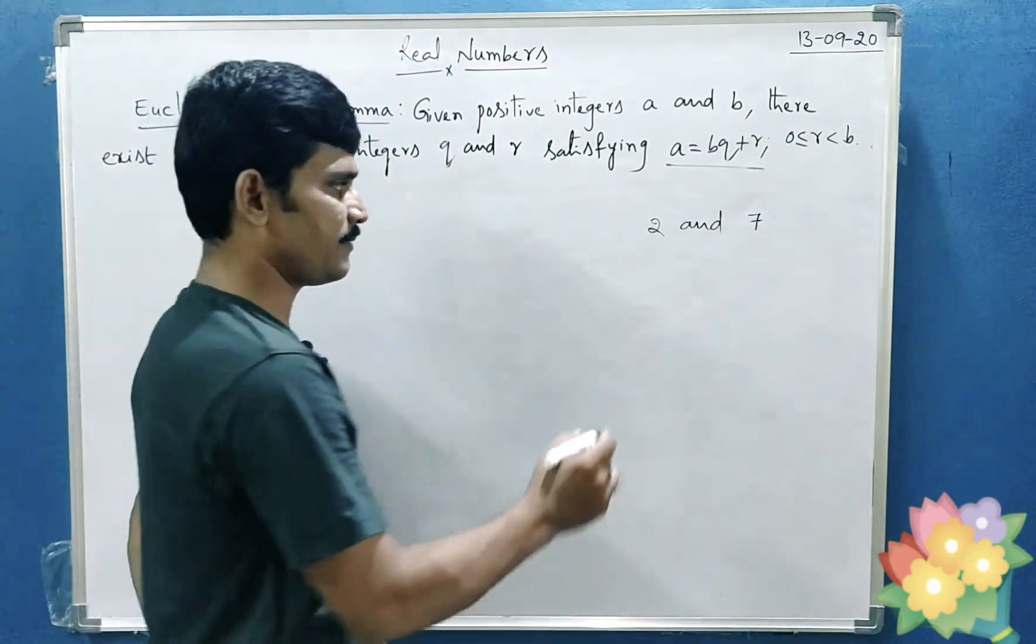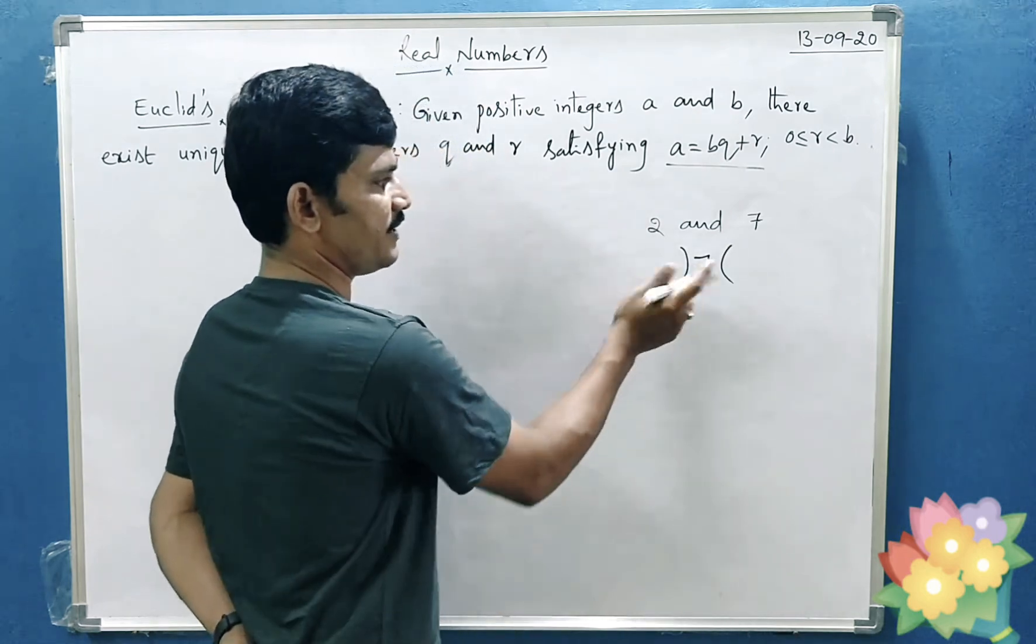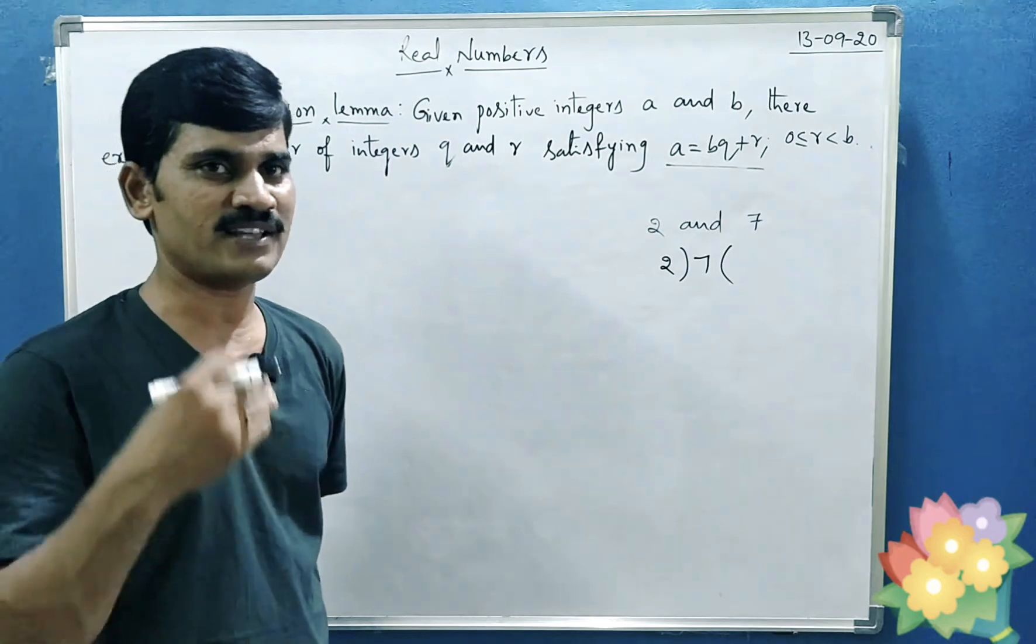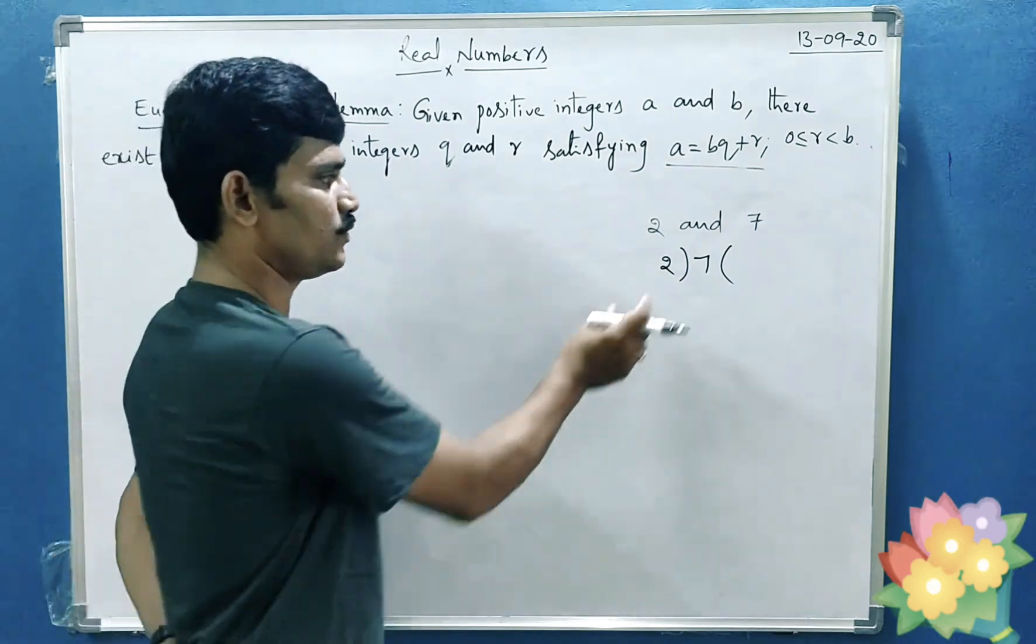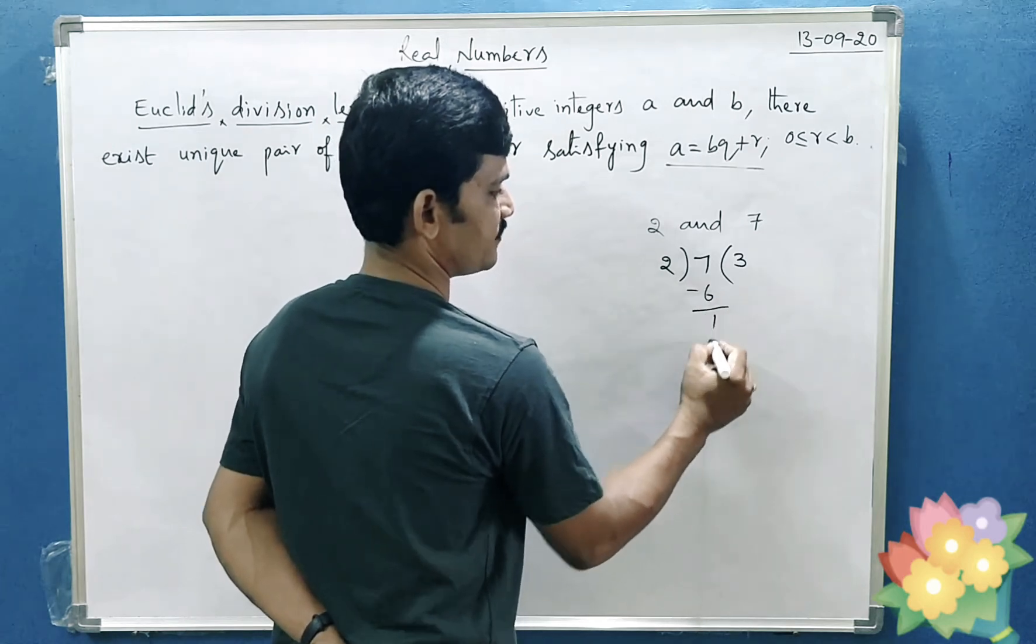Let us go for a division. Take the bigger number as dividend and smaller number as divisor. How many times maximum you can subtract 2 from 7? Three times: two, three, six. Then remainder is one.